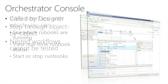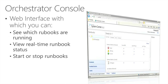The Orchestrator console is a web interface where you're able to see the runbooks, which ones are running, and the real-time runbook status. You're also able to start and stop your runbooks within the Orchestrator console. That web interface uses the REST-based web service that's also part of the Orchestrator architecture.